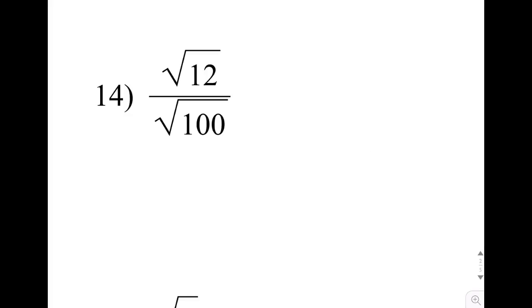Same idea applies over here with radical division, except there's two reasonable approaches that could work here. I'll demonstrate both so you can kind of decide which one you think is easier. On the bottom, we have square root of 100, and I know that the square root of 100 is 10, because 10 times 10 is 100, leaving me with just the square root of 12 on top.